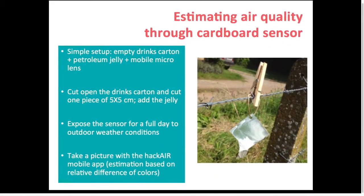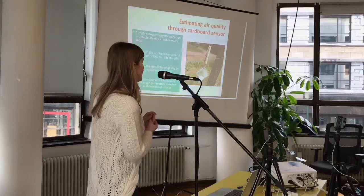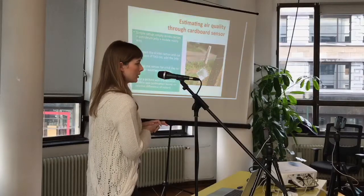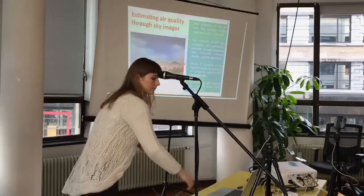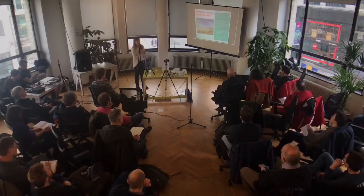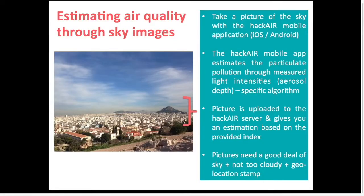Then we have the cardboard sensor — something for kids or youngsters that they can do in school to have an indication about air quality. You use a drinks carton from which you cut out a five-by-five piece, put some petroleum jelly on it, then hang it outside for 24 hours. After that you take a picture of it with a microlens using the HackAir mobile app, which has a special algorithm to give you an indication about air pollution from that particular cardboard sensor or from a picture of the sky.